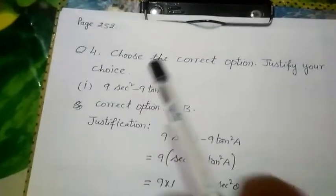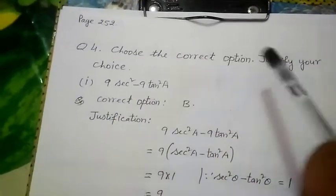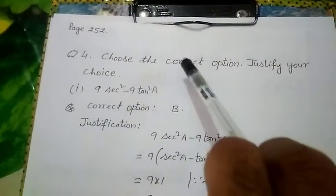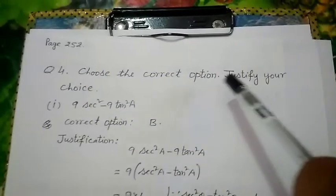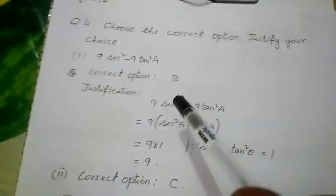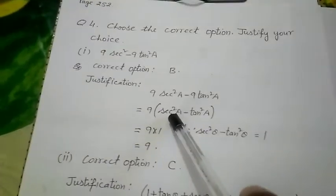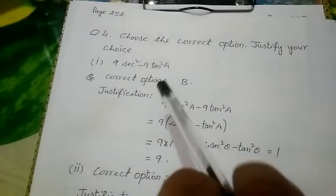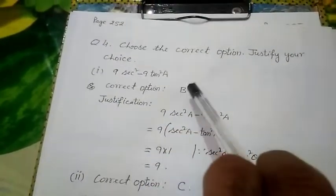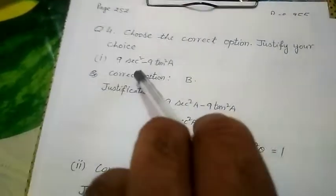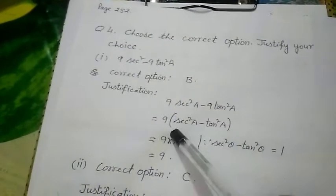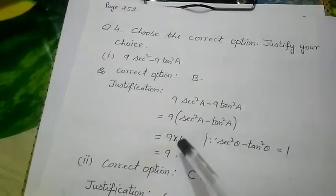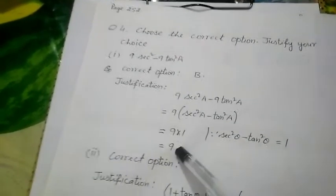Question 4 says: choose the correct option and justify your choice. 'Justify' means you must explain the reason for your selection. First solve the question, then choose the option accordingly. Write the correct option at the top and the justification below. Taking 9 as common, we get sec²θ − tan²θ inside, which equals 1 by identity. So the answer is 9, which corresponds to option B.